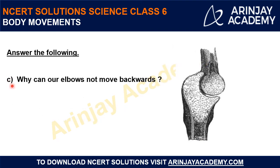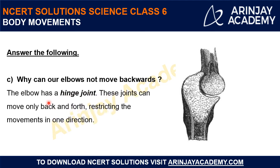C: Why can our elbow not move backwards? The elbow has a hinge joint. The hinge joint is designed such that it cannot allow motion in the backside — it can only move back and forth, but cannot move sideways or in the backward direction. So the movement is restricted by the joint and it can move in only one direction. That is the reason why our elbows cannot move backwards.